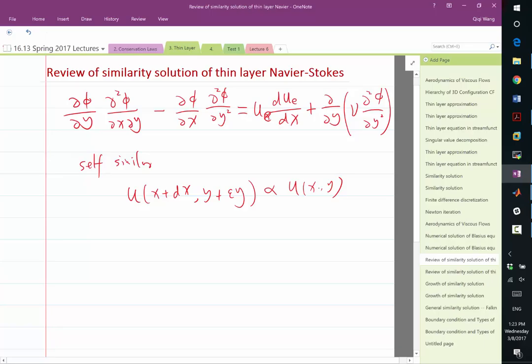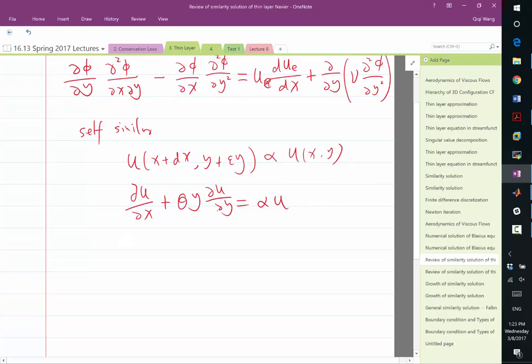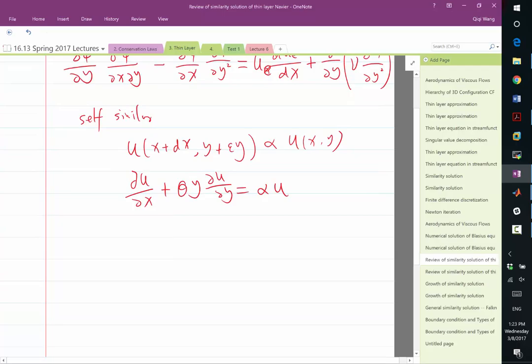And when we differentiate this, we get a differential relationship on the velocity u. So we set this plus theta y, partial u partial y is equal to alpha times u. So this is derived by just the derivative of the definition or the physical interpretation of the self-similarity.